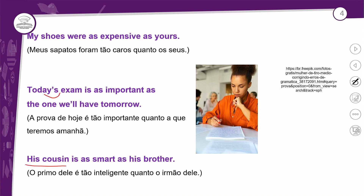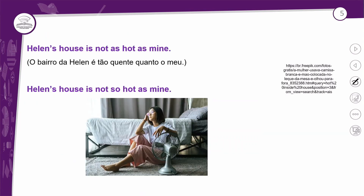His cousin is as smart as his brother. Ou seja, o primo dele é tão inteligente quanto o irmão dele. O adjetivo é 'smart', que é inteligente, esperto. AS ficando como 'tão' e o outro AS ficando como 'quanto'. É muito fácil a questão do comparativo de igualdade — bem simples, bem básico.